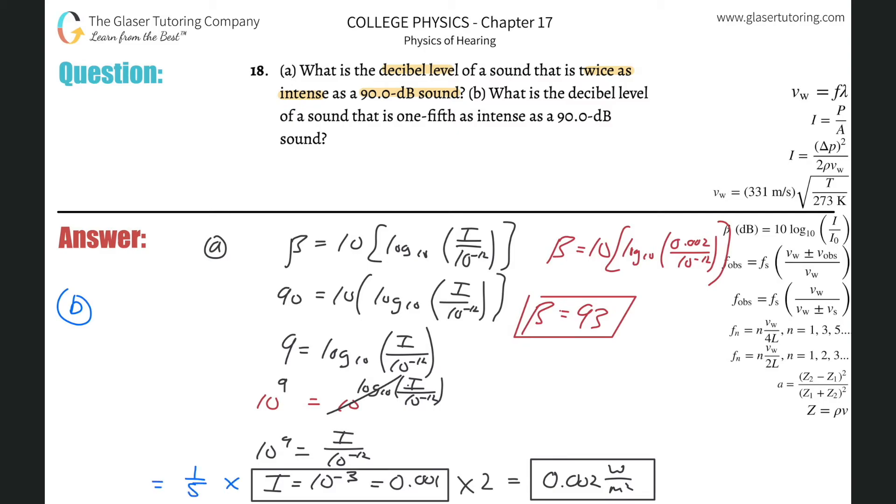So what I'm going to do is simply take one-fifth of this now. So multiply that by one-fifth. So 0.001 times one over five, and that's going to be 2 times 10 to the minus 4. So the new intensity here is going to be 2 times 10 to the minus 4 watts per meter squared.